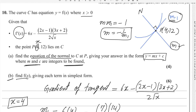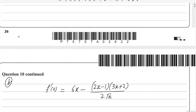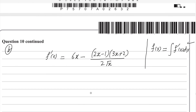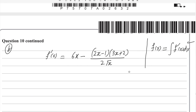For the second part, find f(x) giving each term in its simplest form. Only the derivative is given. Using the formula that f(x) equals the integral of f'(x), you integrate the derivative to get the function, because differentiation and integration are inverse operations. First, simplify the derivative before integrating.